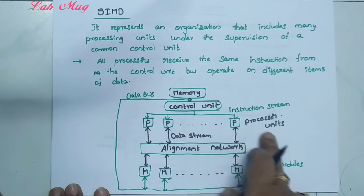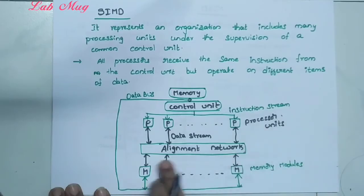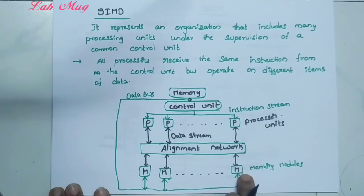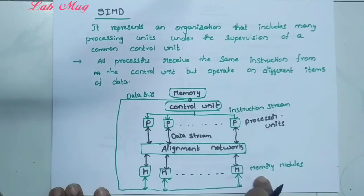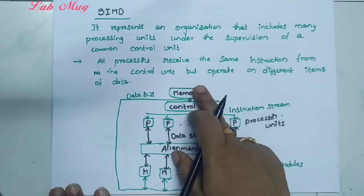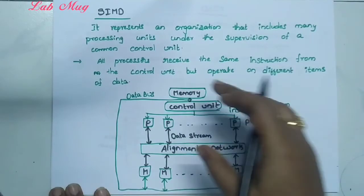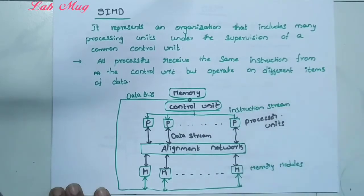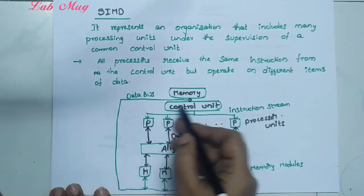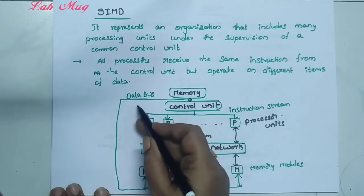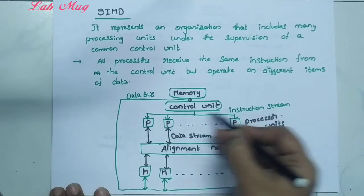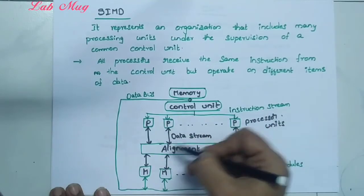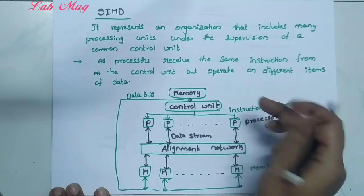Here memory provides multiple data items. From memory via control unit, through a data bus, there are multiple processor units, alignment networks, and multiple memory units. M means memory units, P means processing units. So multiple processors and multiple memory units, but only one control unit. Via the control unit, instruction streams are passed to all multiple processors — a single instruction goes to all processors.